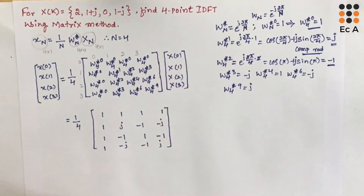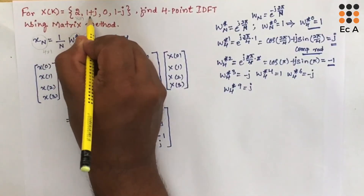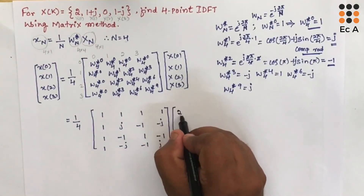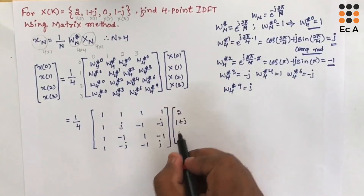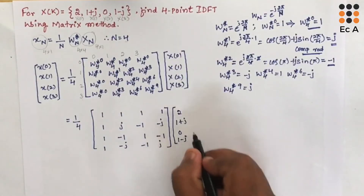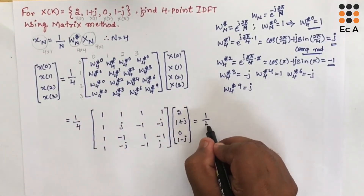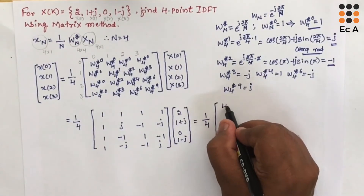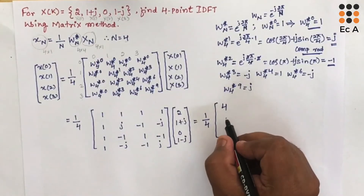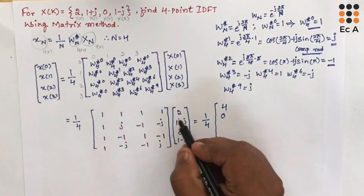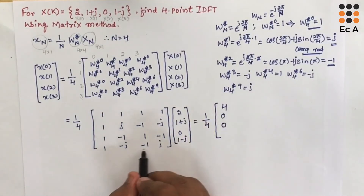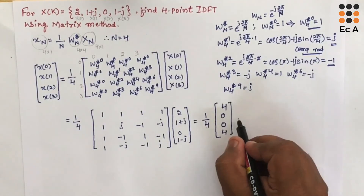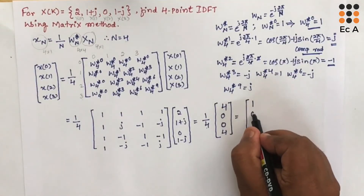For the given input sequence: x(0) = 2, x(1) = 1+j, x(2) = 0, x(3) = 1-j. We write (1/4) times this matrix multiplied by the input vector. Multiplying the first row gives 4, the second row gives 0, and the third row gives 4. Dividing by 4 gives the output values 1, 0, 0, 1.